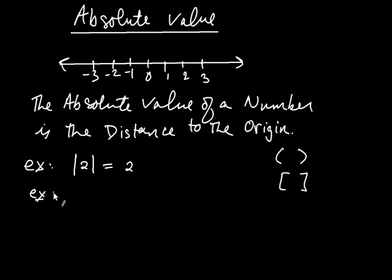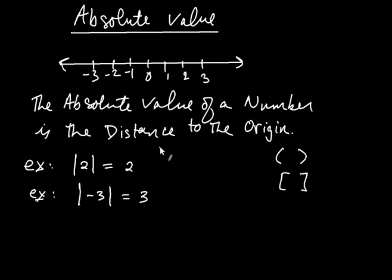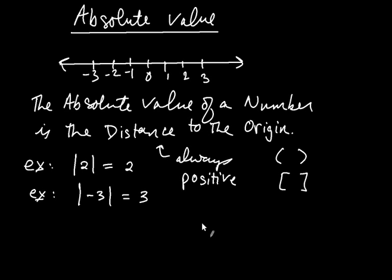And likewise, if somebody asked you what's the absolute value of the number negative 3, it's the same logic — the number negative 3 is 3 miles from the origin. Now, usually we don't say the word miles, but maybe 3 units from the origin. But the point is that distance is always positive.